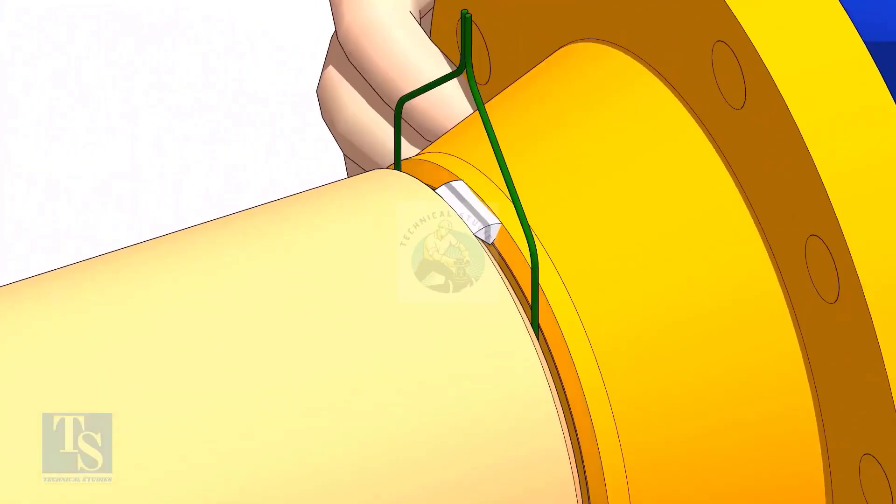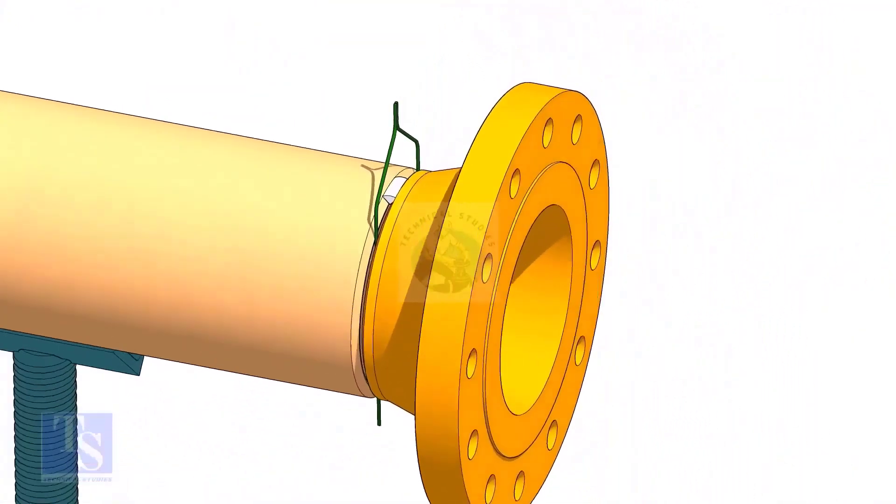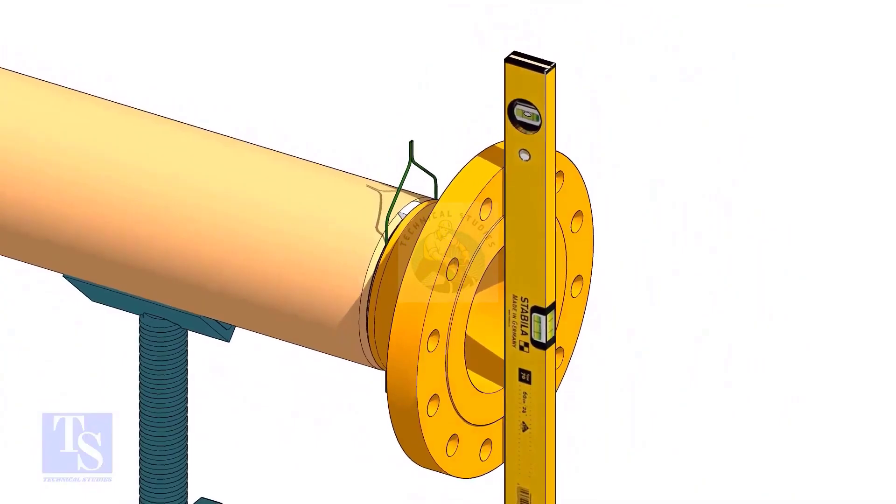Tack weld on the top side of the joint. Check the level of the flange vertically and tack weld on the bottom side of the joint.